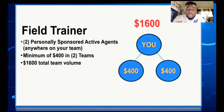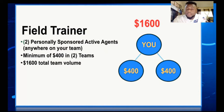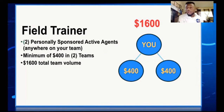In this company, to get a position you need two things: structure — that means the number of agents you need in your team — and volume, meaning the number of sales made in the business per month. Just like any store, they have a number of sales per month — in November, in October, in September.